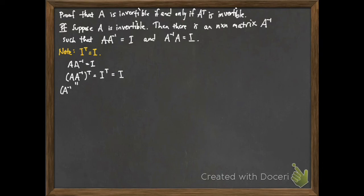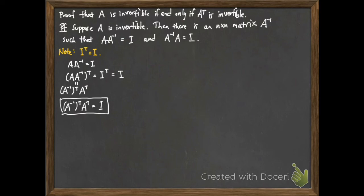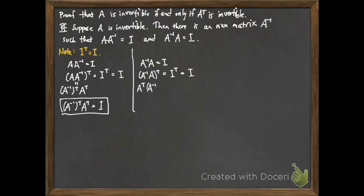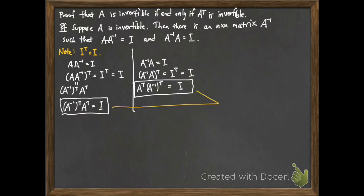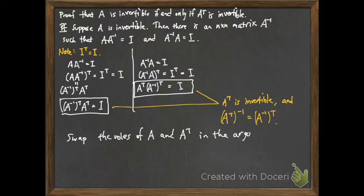For the first equation, using the fact that the transpose of a product of matrices is the product of the transposes in the opposite order, I get A inverse transpose times A transpose equals the identity. Repeating the computation for the other equation — A inverse A equals the identity — again using the transpose-of-product rule, I get A transpose times A inverse transpose equals the identity. These two statements together tell me that A transpose is invertible, because I found a matrix I can multiply on both sides to get the identity matrix.